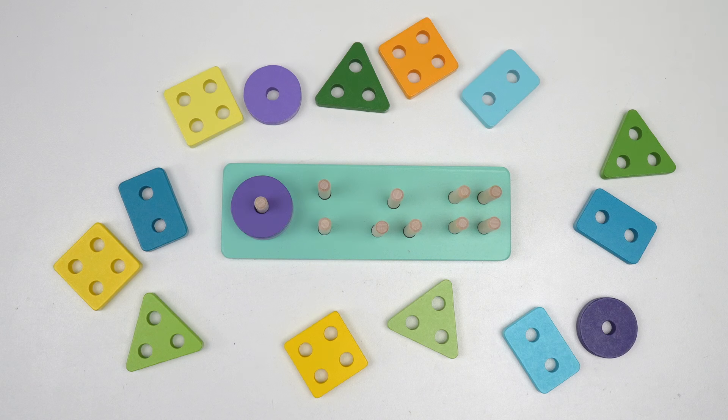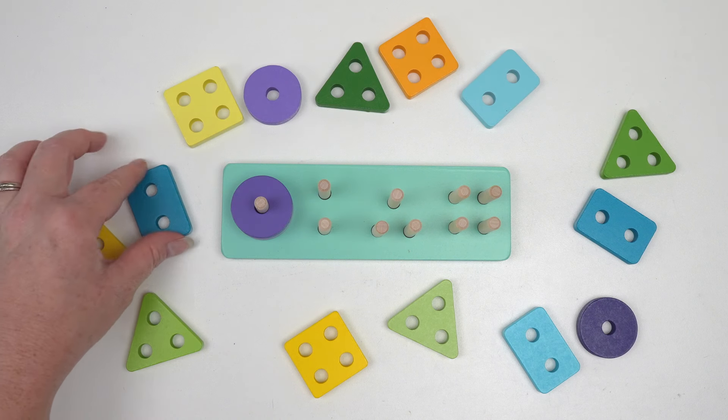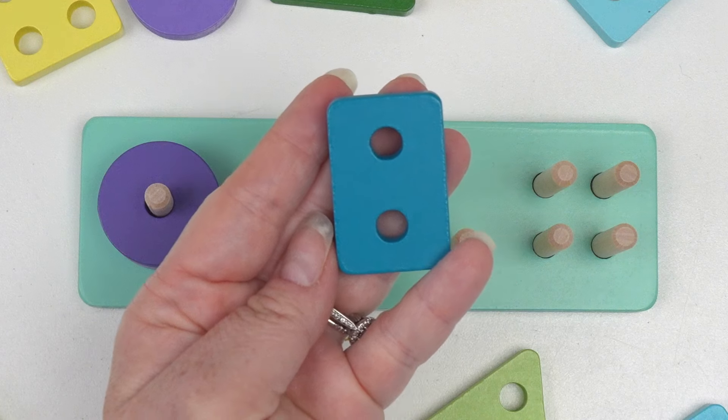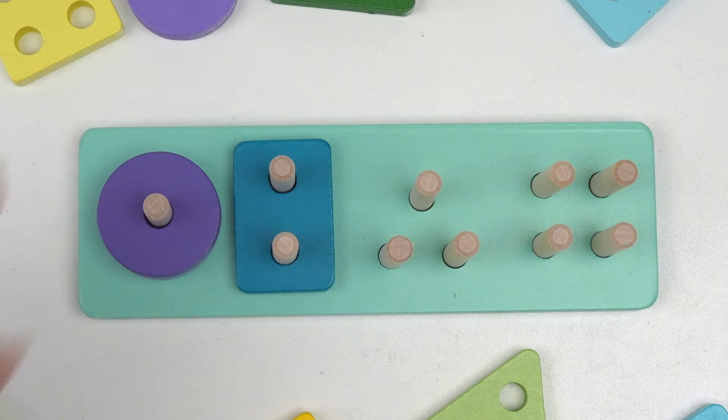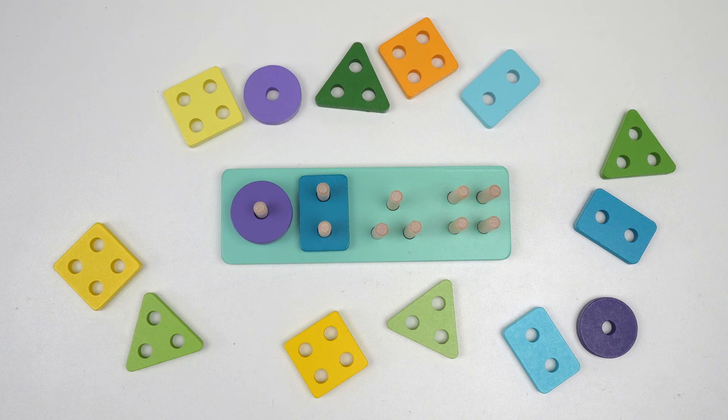Oh, but the shape next to it has two holes. This shape is called a rectangle. Let's find one more rectangle and then we'll look for our next shape.